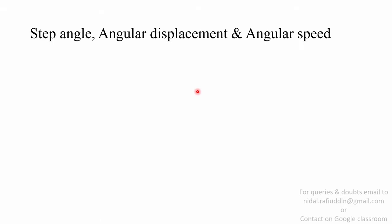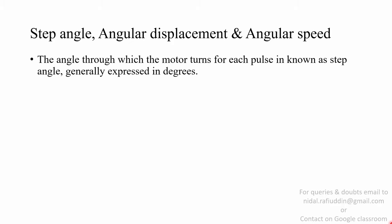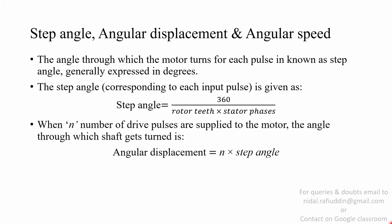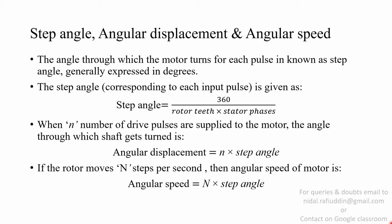The angle through which the motor turns for each pulse is known as the step angle, expressed in degrees. The step angle corresponding to each input pulse is given as 360 divided by (rotor teeth × stator phases). If N is the number of drive pulses supplied to the motor, the angular displacement is N × step angle. If the motor moves N steps per second, the angular speed of the motor will be equal to N multiplied by the step angle.